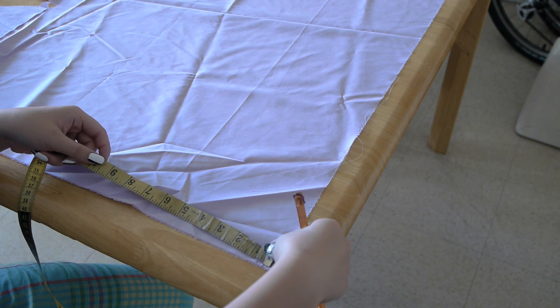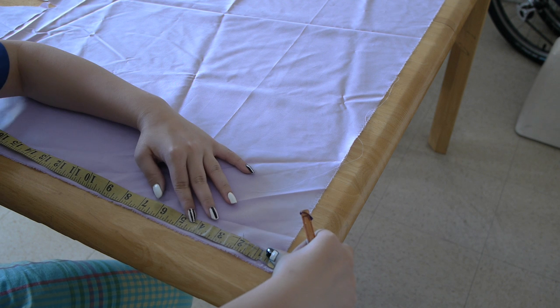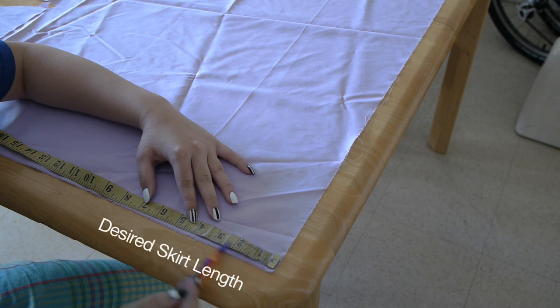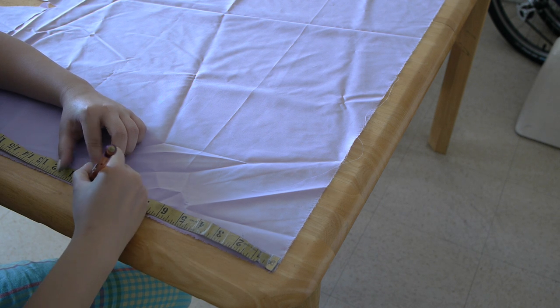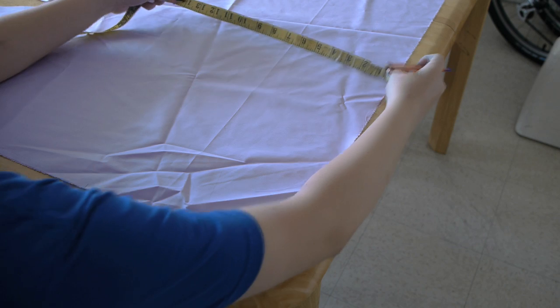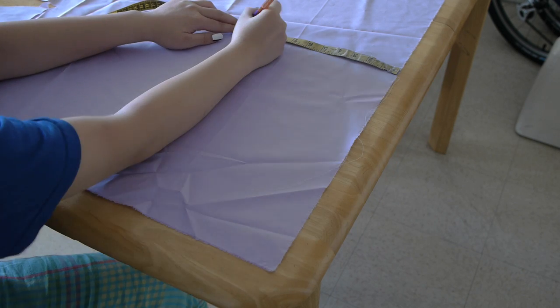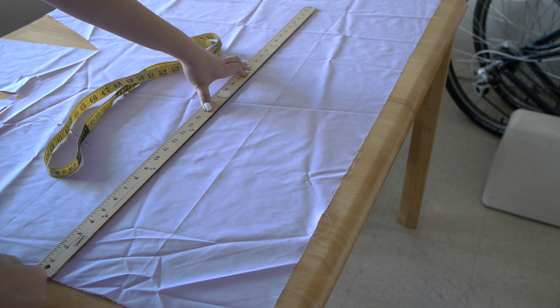First, you're going to start out by marking your desired skirt length along your fabric. Connect the marks you made with a ruler and cut your fabric out.